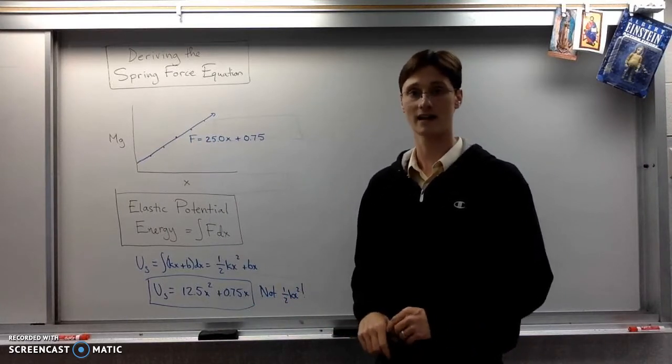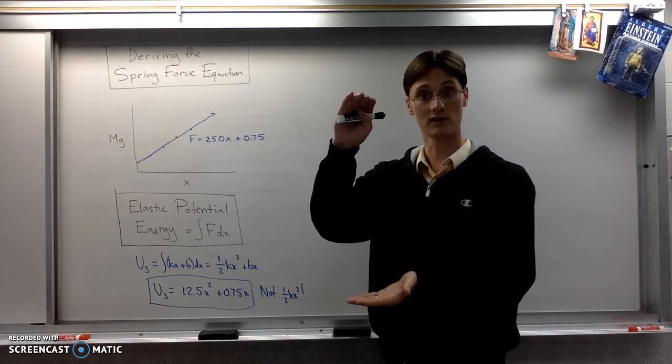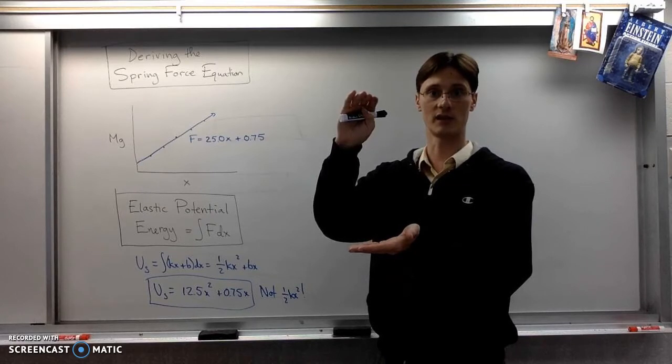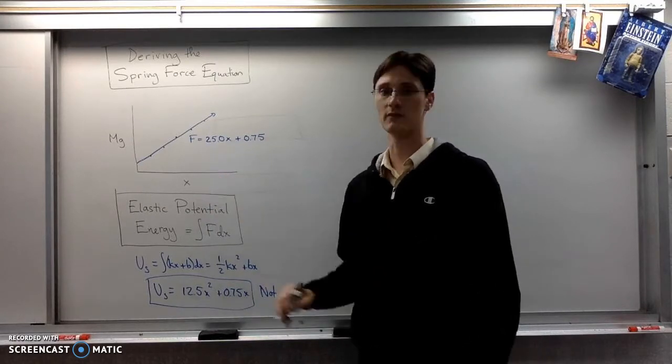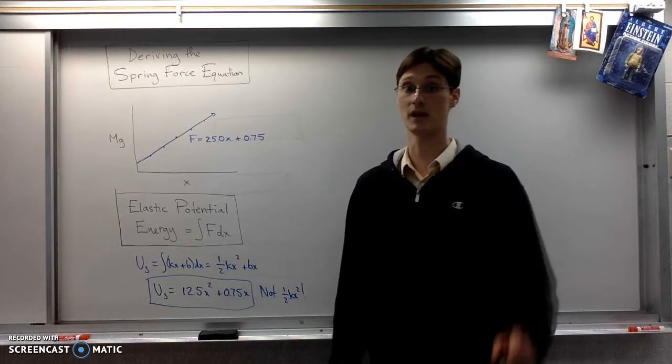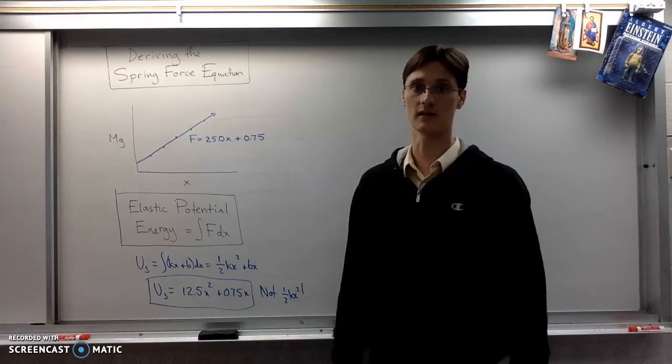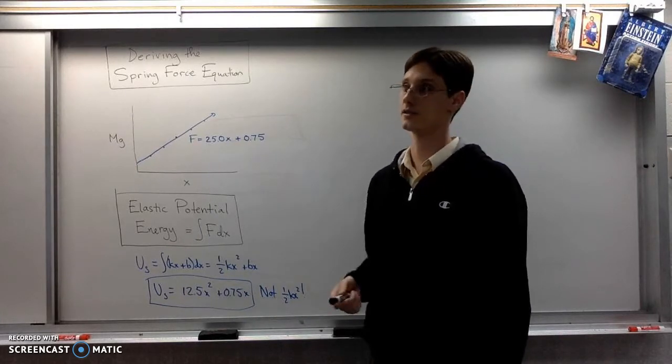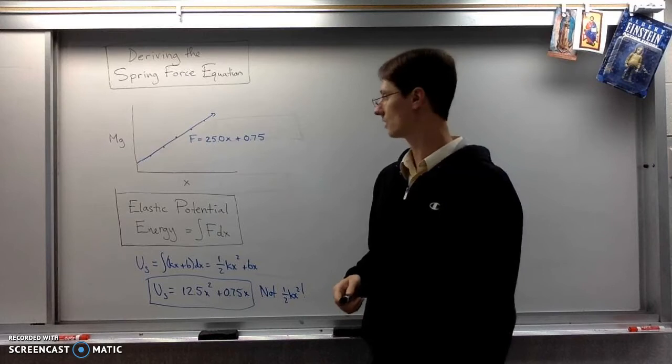Okay, you want to subtract the length of the spring when it had something hung on it from the unextended length of the spring. And so your values should be relatively small things like 2.3 centimeters, but convert it into meters. Because if you forget to do that, then your slope will be a hundred times too small.